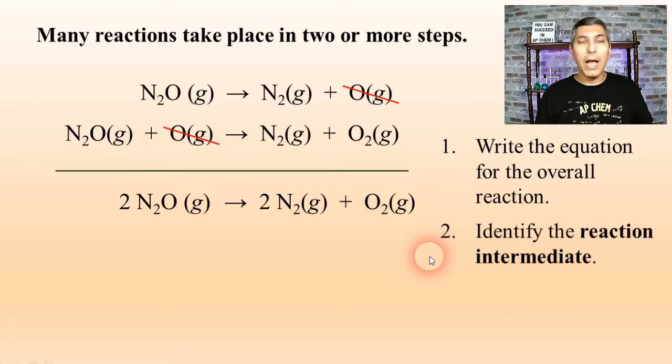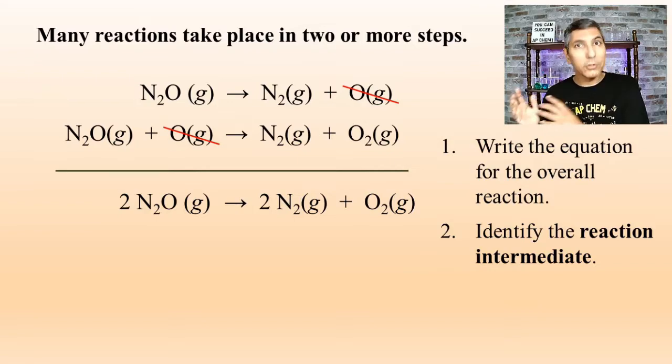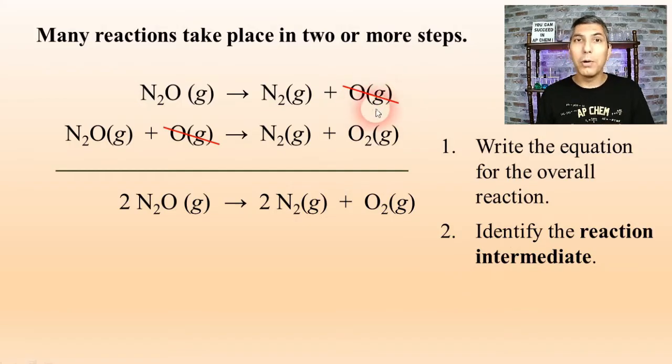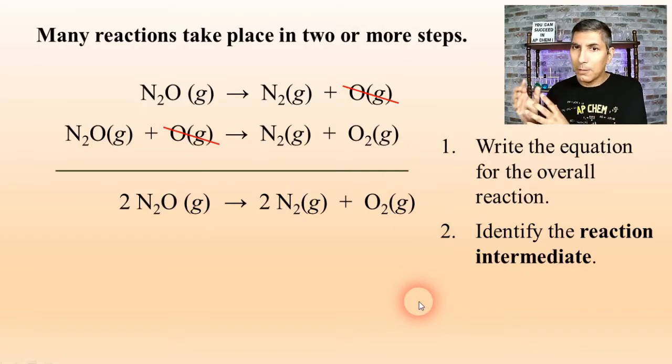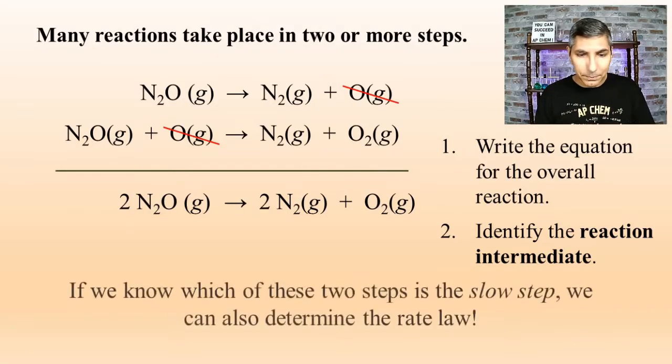Now, the second question here is, identify the reaction intermediate. The reaction intermediate is the substance that's produced in that early step that's used up in the later step. In this case, that's the substance that we canceled out, that oxygen atom. So that O is the reaction intermediate. Remember, an intermediate is just something that's produced early on that's used up in a later step.